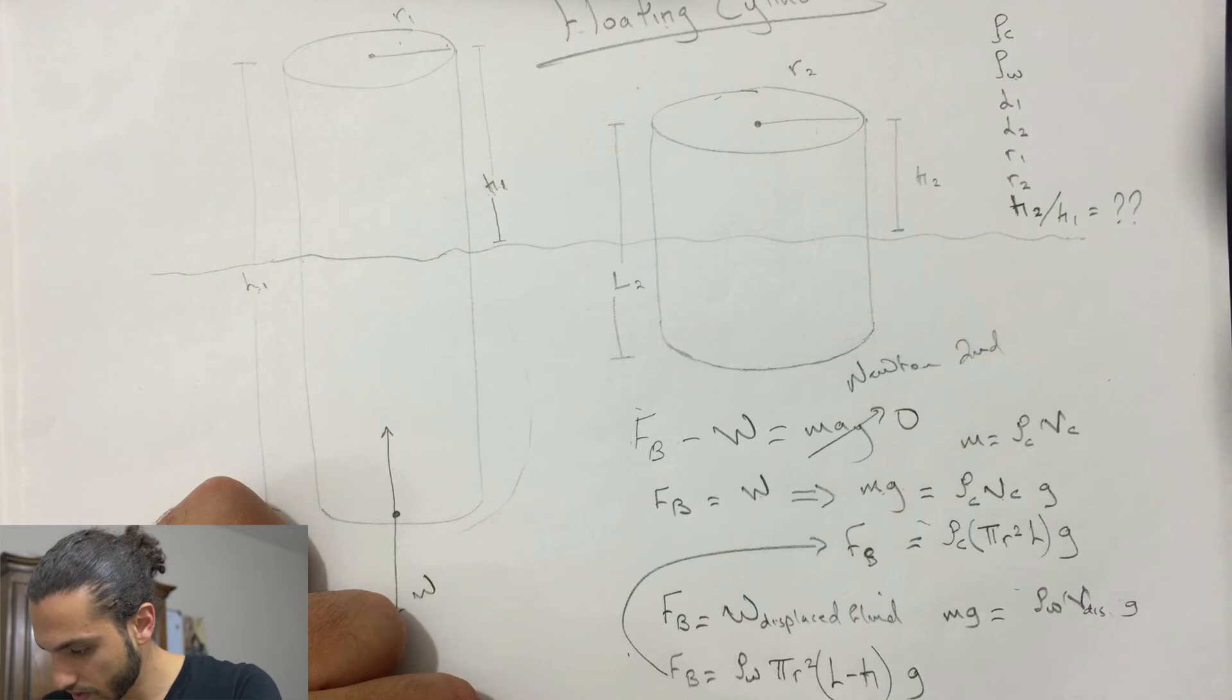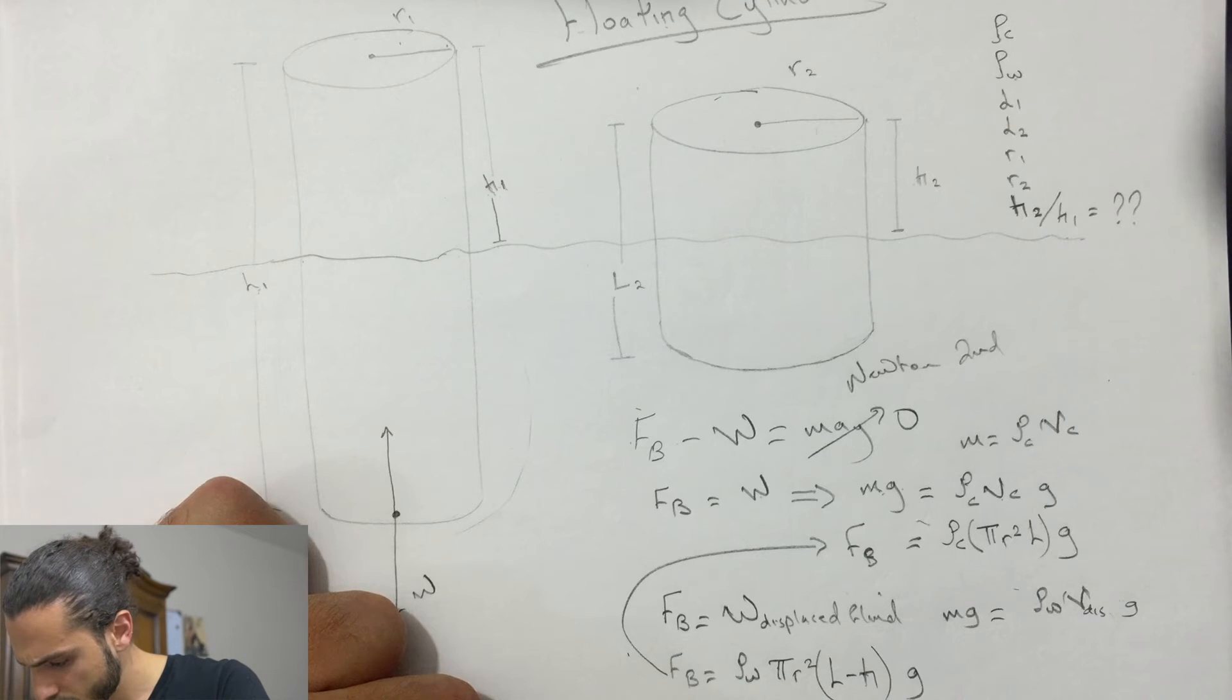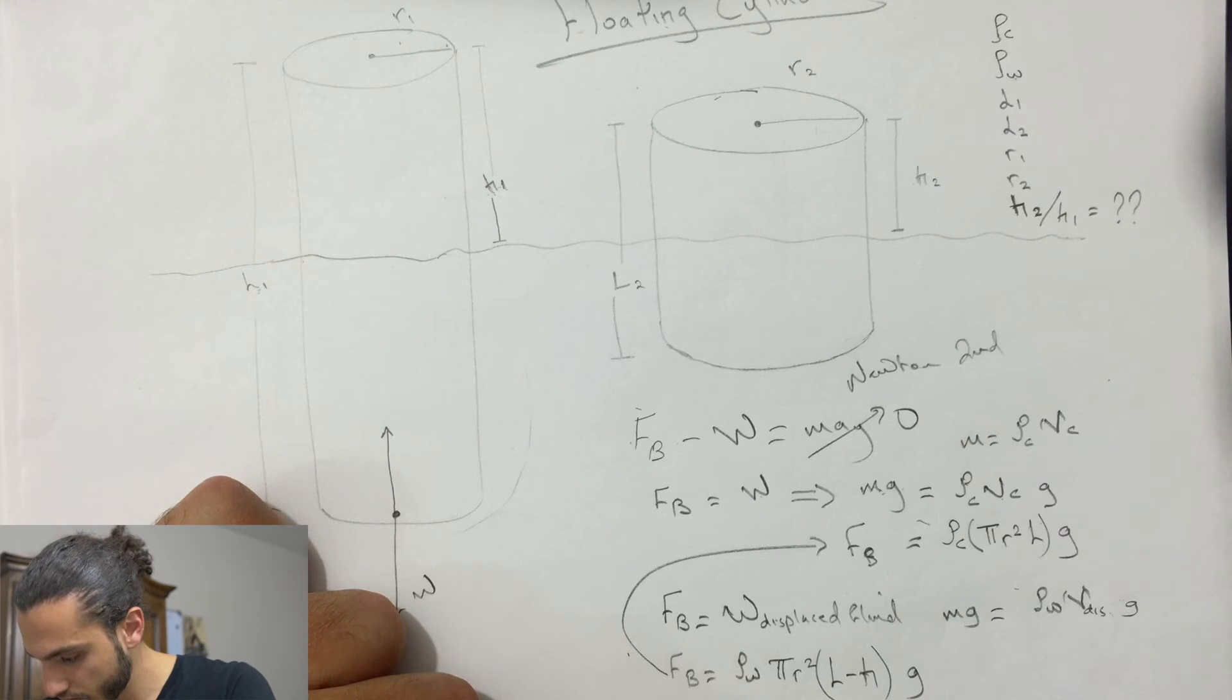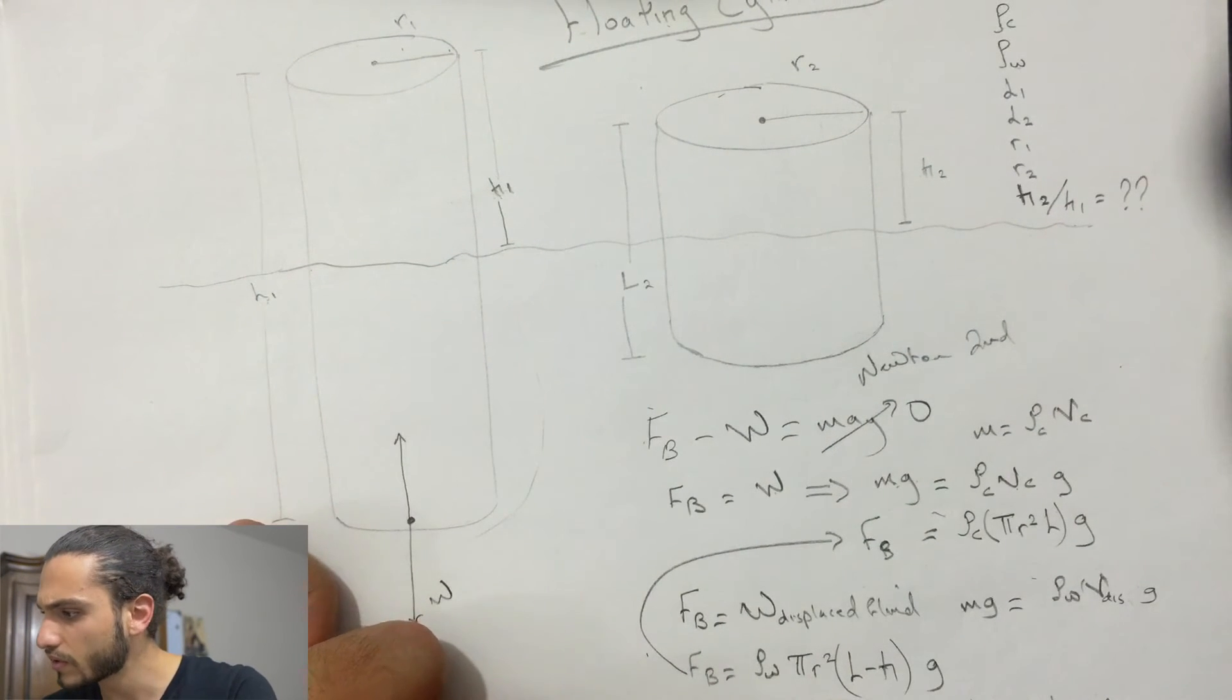We're left with here, it's rho of the cylinder times L divided by rho of the water. So we want to solve for H, so H is going to be equal to...